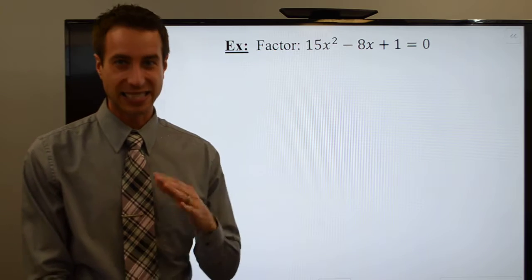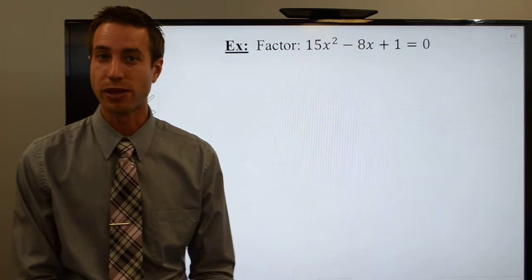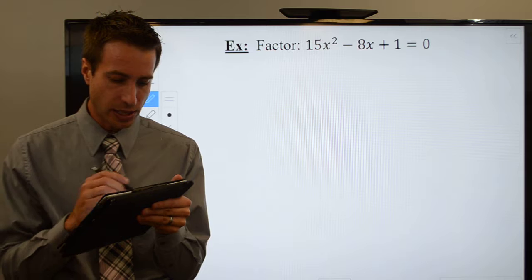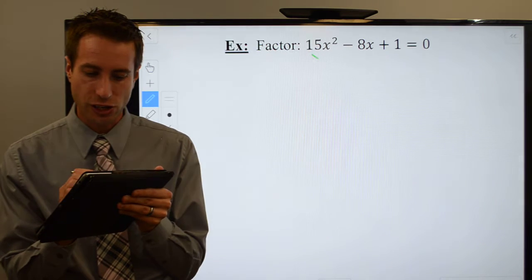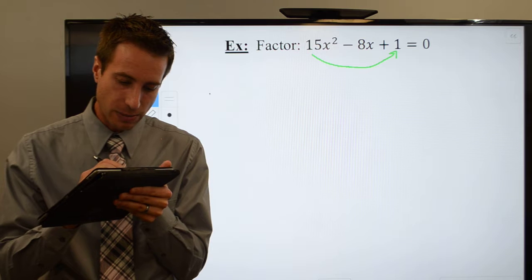And right away I recognize that this one's a little trickier because my a is something other than 1. I think the slide and divide method is going to be the fastest way to do this, so let's go ahead and give that a shot. We're going to slide that leading coefficient over, and it's going to leave me with x squared.